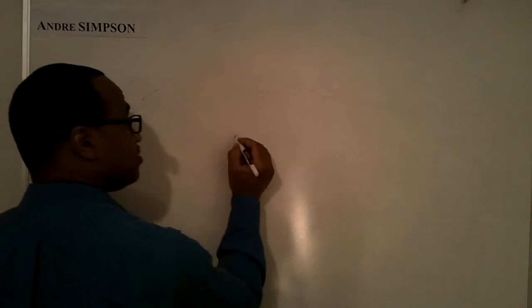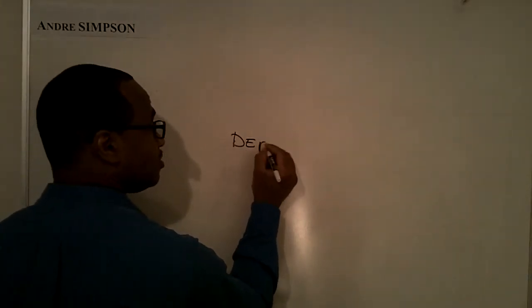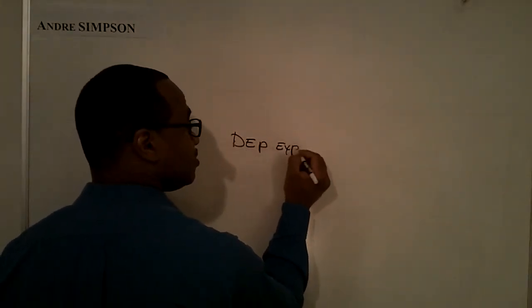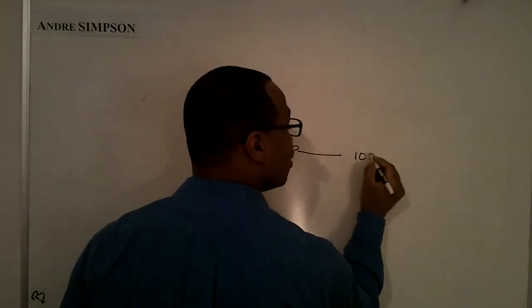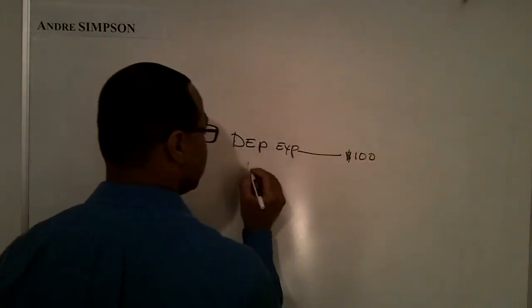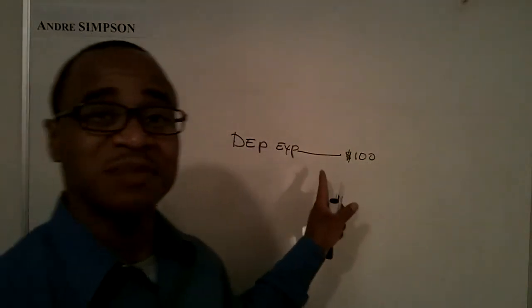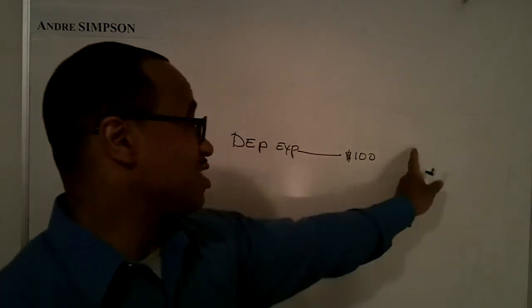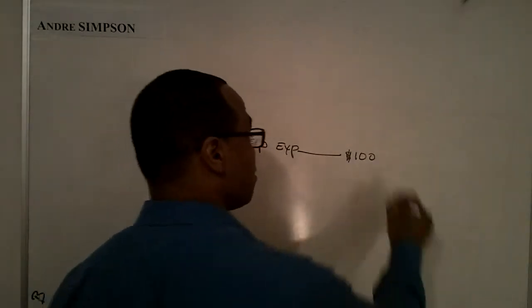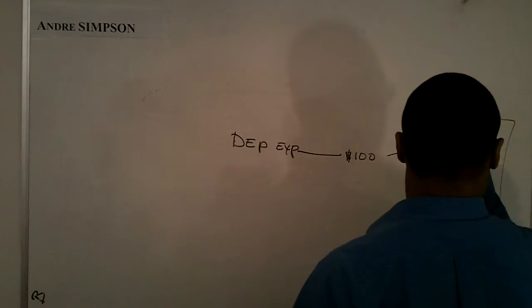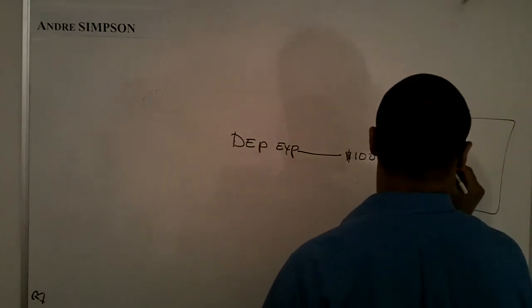You're going to make a journal entry. The first one is depreciation expense. That's going to flow through to your income statement as an expense.